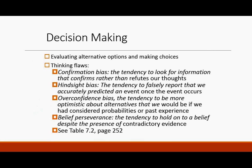Hindsight bias is the tendency to falsely report that we accurately predicted an event once the event occurs. Your mom comes to you and says, 'I knew that girl was no good for you, I knew from the first time I met her.' No, you didn't. But we like to think that we knew ahead of time. Overconfidence bias is the tendency to be more optimistic about alternatives than we would be if we had considered probabilities or past experience. Belief perseverance is the tendency to hold on to a belief despite the presence of contradictory evidence — our beliefs are likely to persevere.